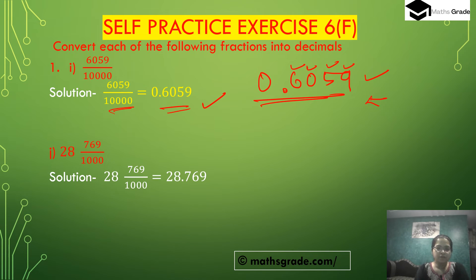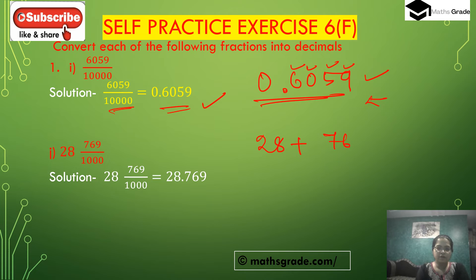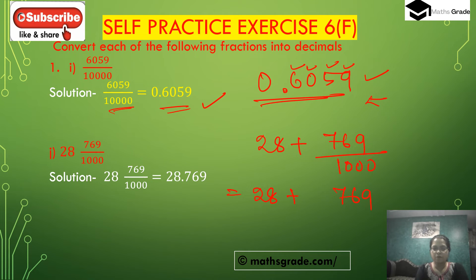Part j: 28,769 divided by 1000. We can write this as 28 plus 769 divided by 1000. The denominator 1000 has three zeros and the numerator 769 has three digits, so we place three digits after the decimal: 0.769. Adding the whole number part: 28 plus 0.769 equals 28.769.